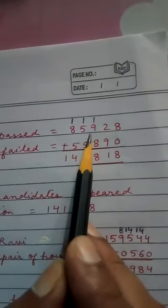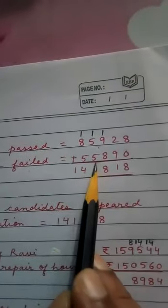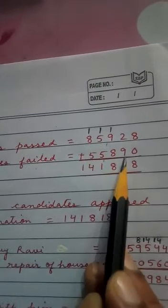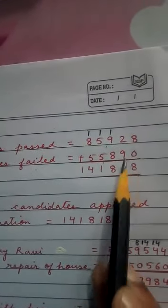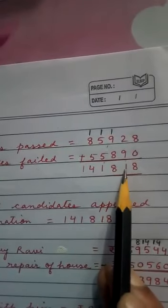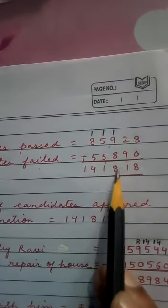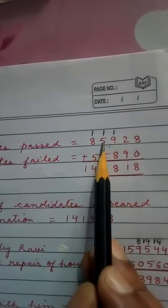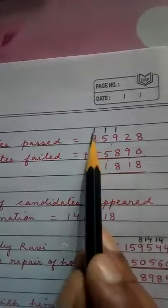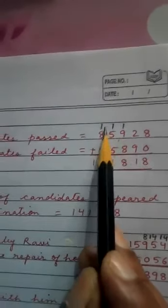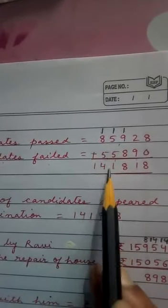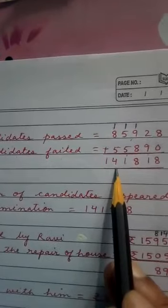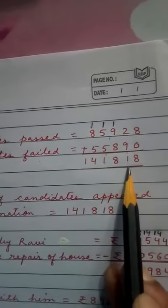So number of candidates passed 85,928. Number of candidates failed 55,890. Now add it. 8 plus 0, 8. 2 plus 9, 11, 1 you write here and 1 here. So 1 plus 9, 10, 10 plus 8, 18. 8 here and 1 here. So 1 plus 8, 9, 9 plus 5, 14. So 1,41,818.